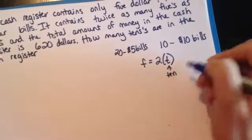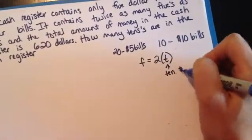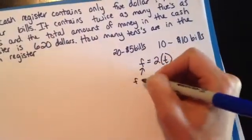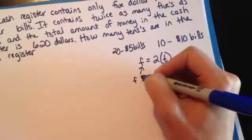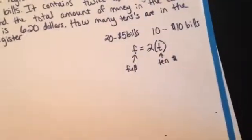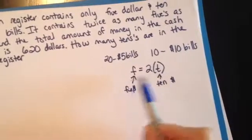Does that make sense? So this will be $10 bill, and this is my $5 bill. Okay, so there's going to be one of my equations.